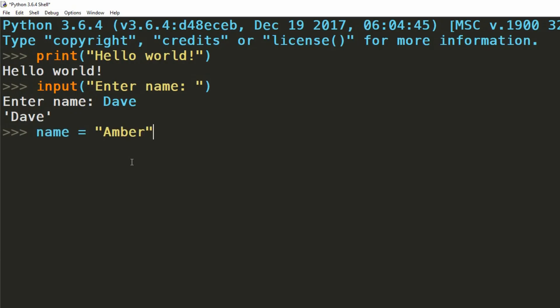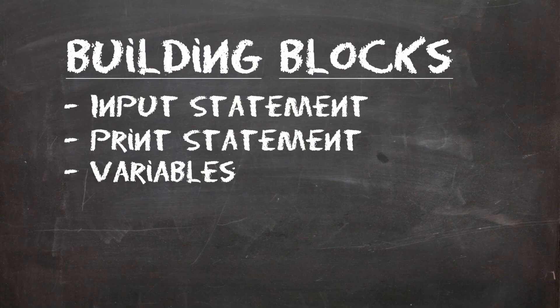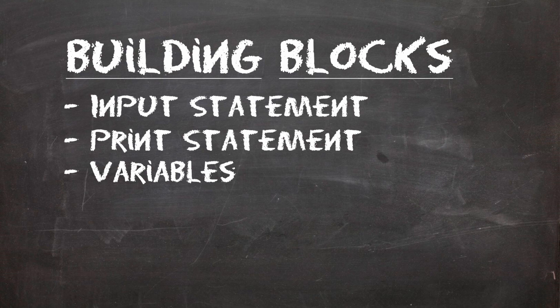On screen now, we're creating a variable called name, with the information Amber inside it. Great, we can now use this information later on in our program. Try using this variable with the print statement that we saw before. You'll notice that what's printed out isn't actually the name of the variable, rather the data that's inside it. We now have all the basic information that we need to create a simple program.